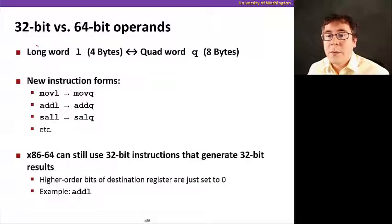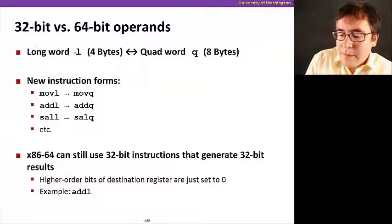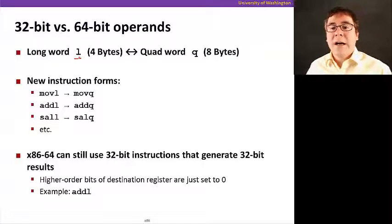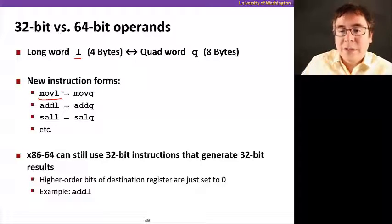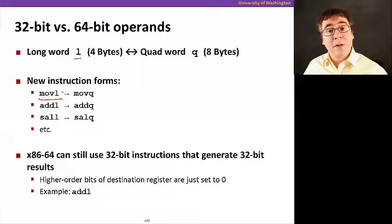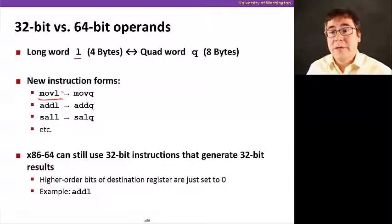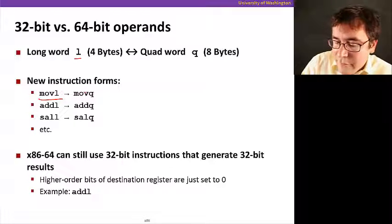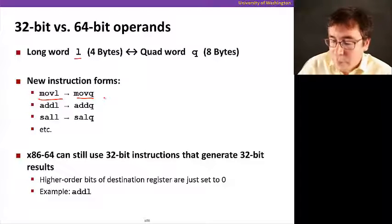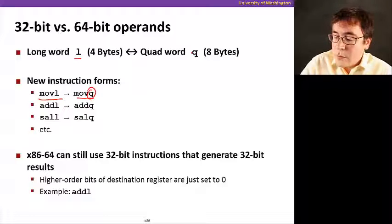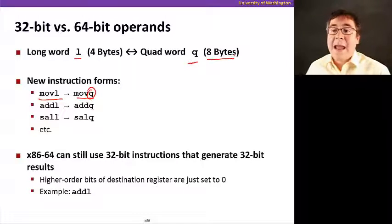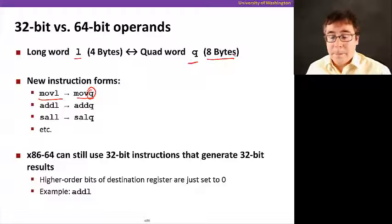And now, the way we look at operands in 32 versus 64-bit modes is the following. Remember that we had in IA32, we looked at moveL, and L referred to moving four bytes worth of data. Now what we have in x86-64 is moveQ. It's a new type of data size that is eight bytes or 64 bits long.